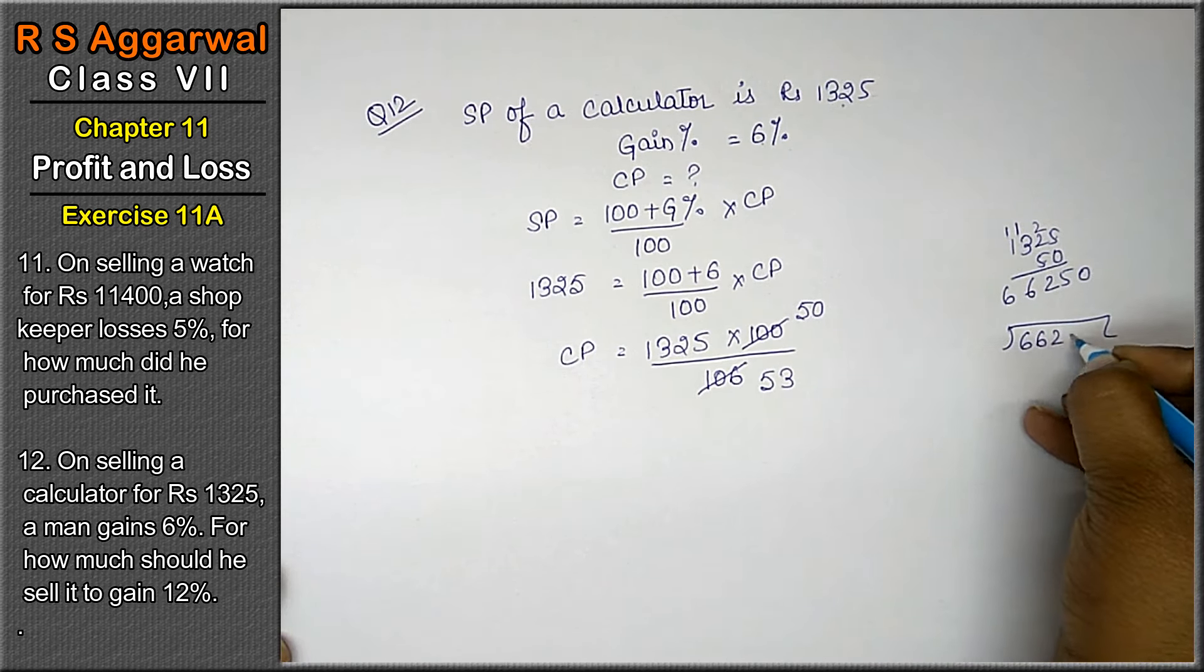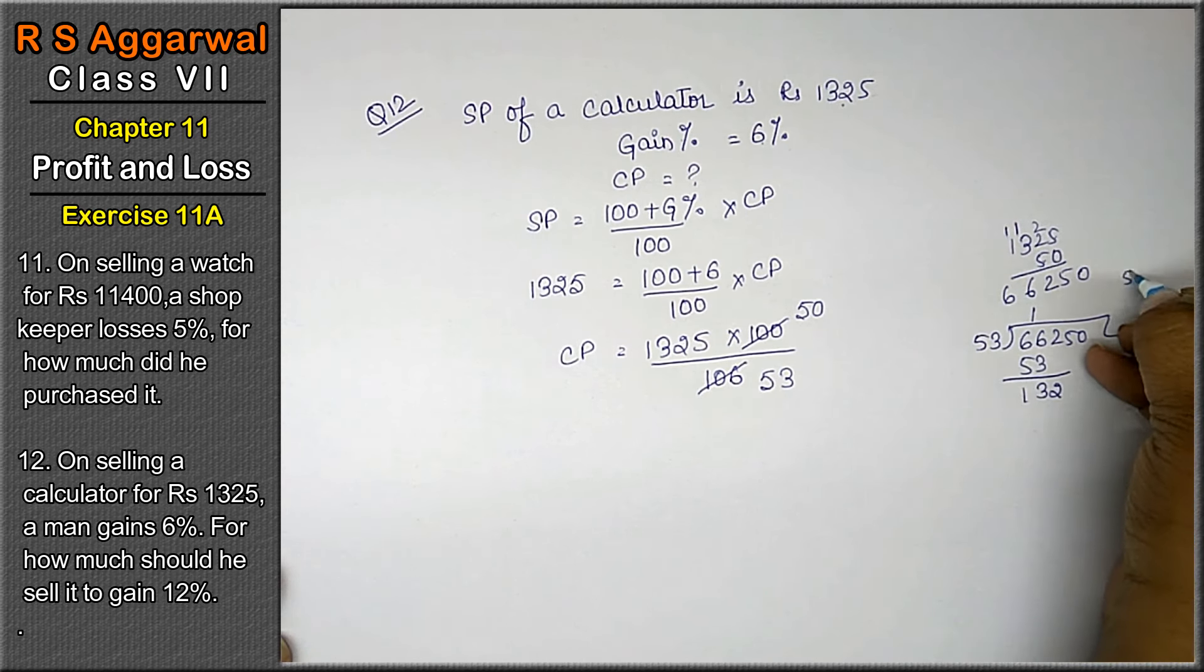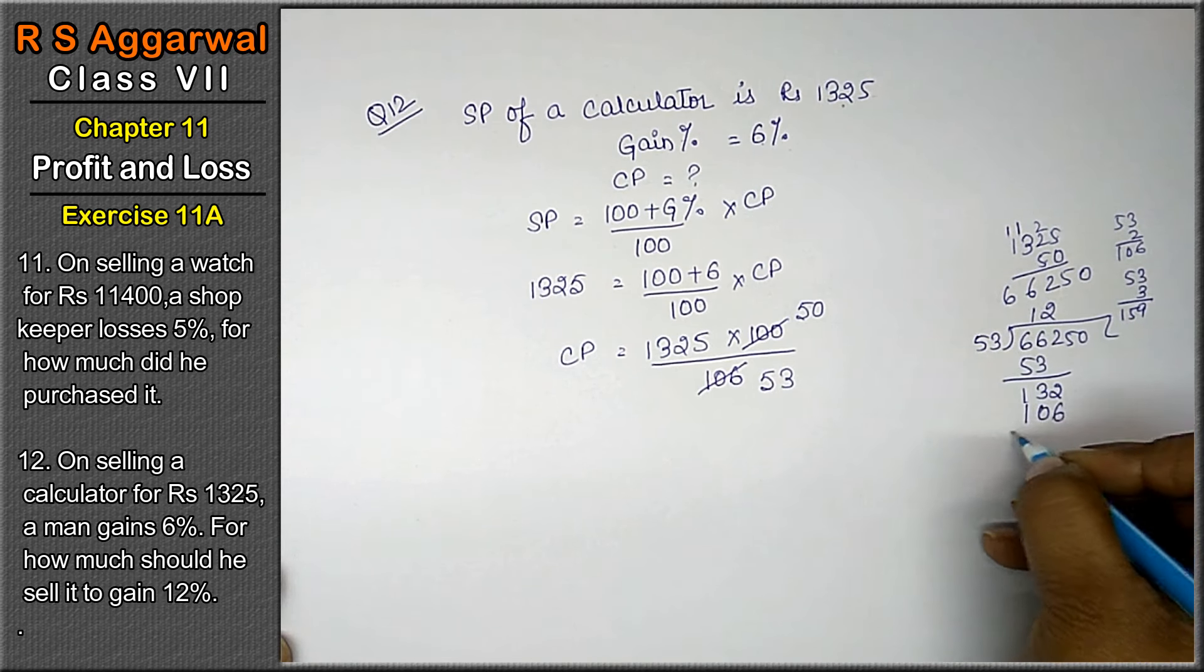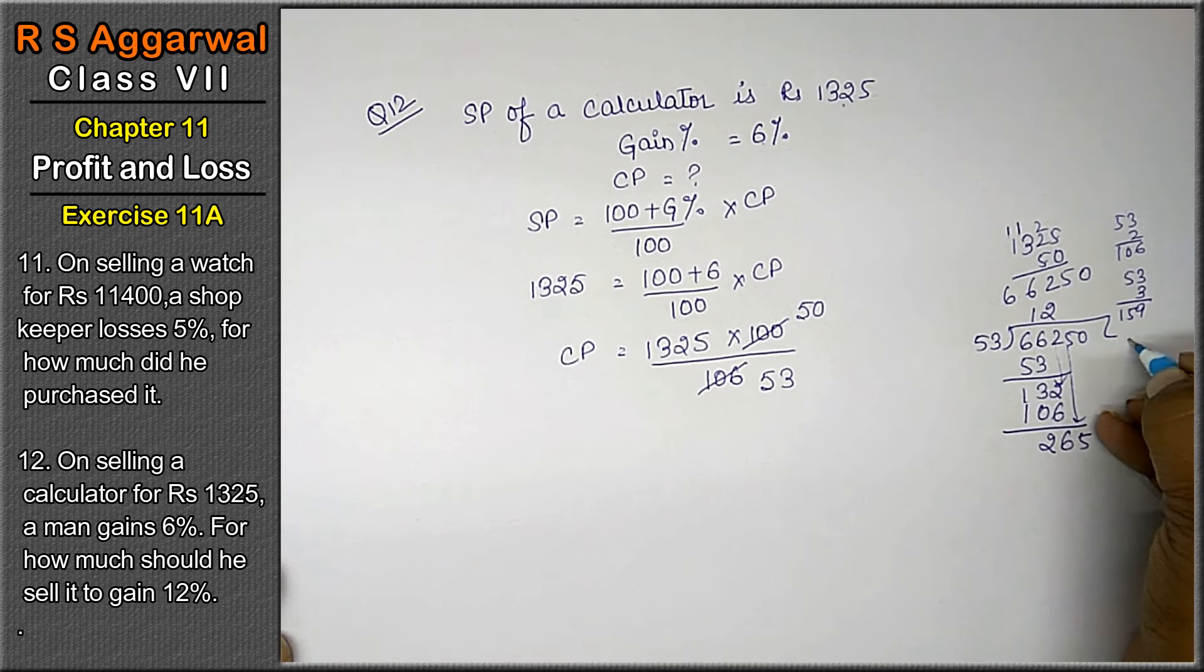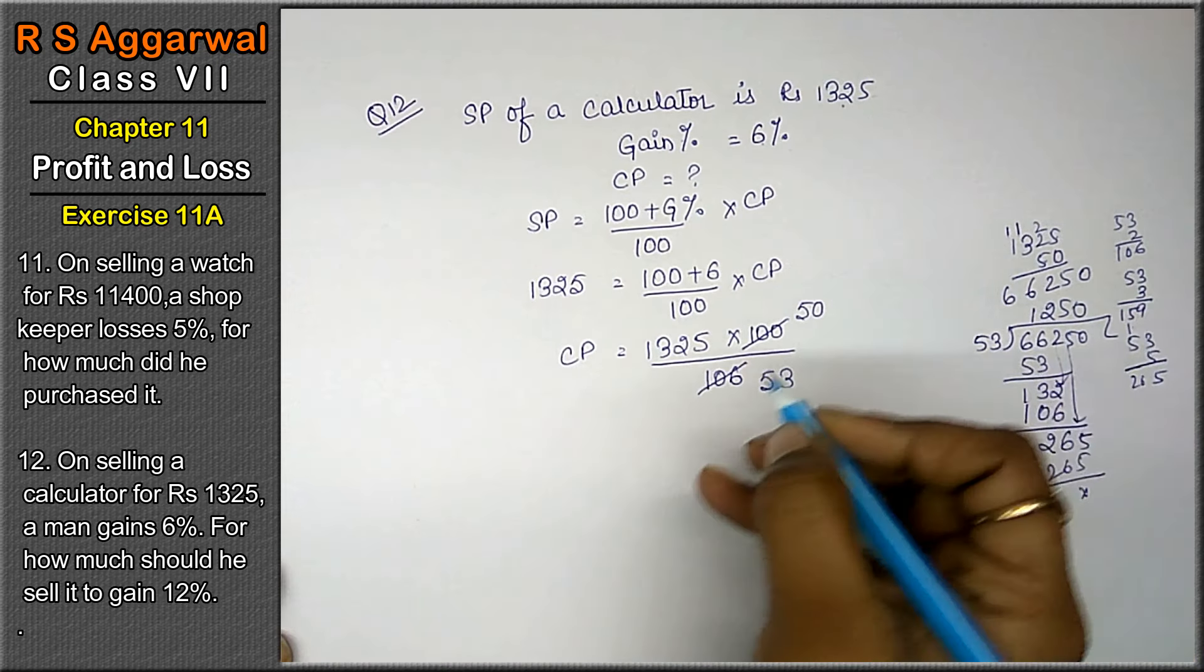Now we'll divide 66,250 by 53: 53 × 1 is 53, then 132, 53 × 3 is 9, 15. 53 × 2 is 6, 10. 12 minus 6 is 6 and 2. Now we'll bring down 5. 53 × 5 is 15, 25, 26, 265. The 0 that remains will come here, so the answer is 1,250.